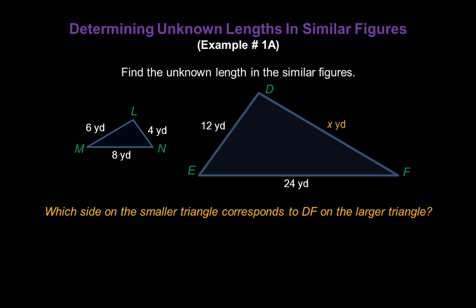So which side on the smaller triangle corresponds to DF on the larger triangle? Did you say LM? If you did, that's right. So we can set up a ratio for those two sides. Let's put DF over LM.